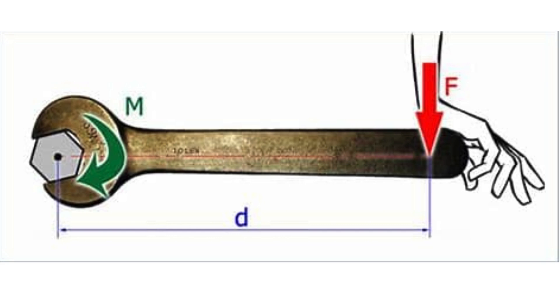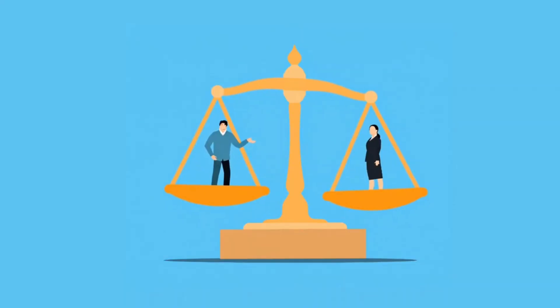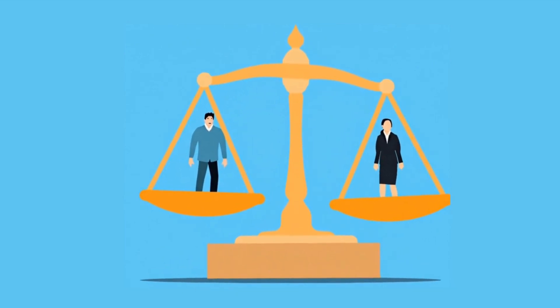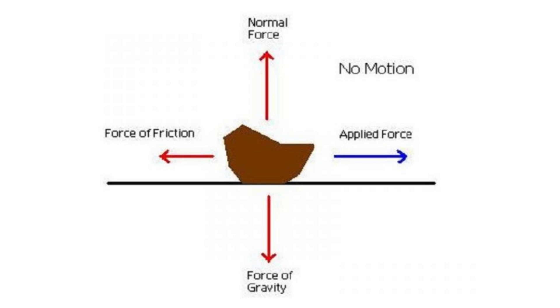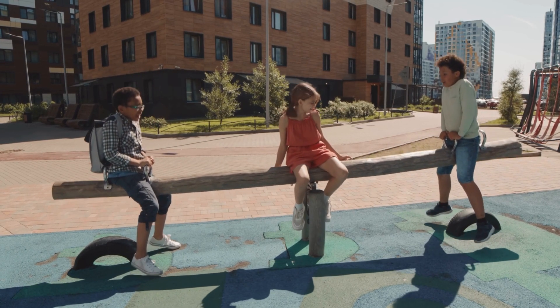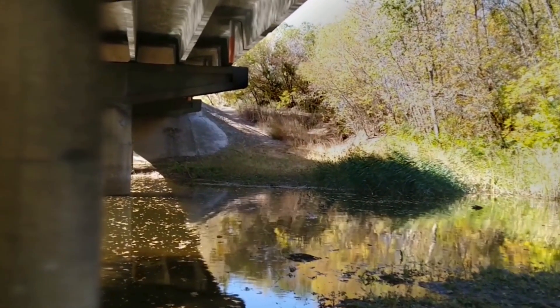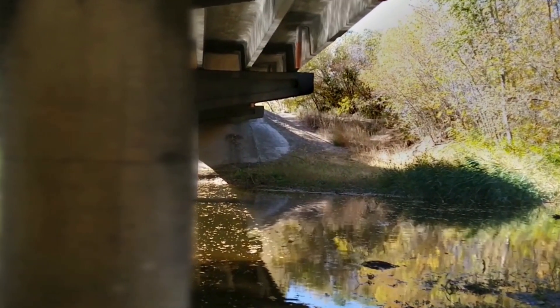A moment is a more general term that describes the tendency of a force to cause rotation, even if no rotation actually occurs. It is often used in situations of static equilibrium, where forces and moments are balanced and the object remains stationary. The key idea is it's a static force, or a force that is counteracted, so the object remains at rest — for example, the force on a balanced seesaw or the forces on a bridge support that prevent it from bending or rotating.